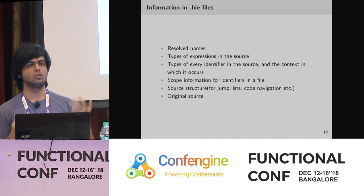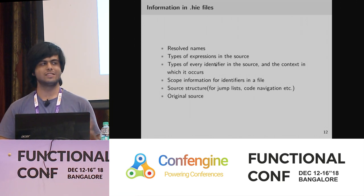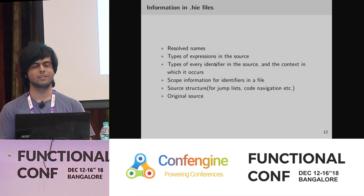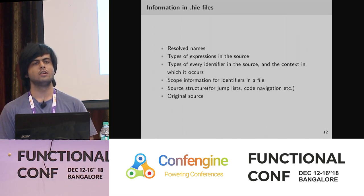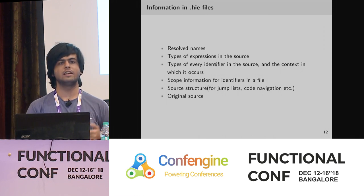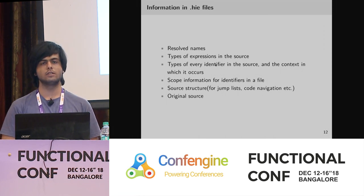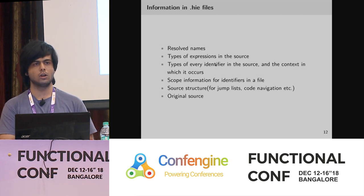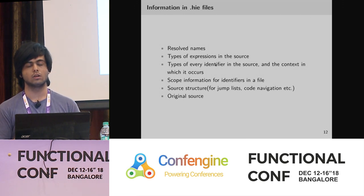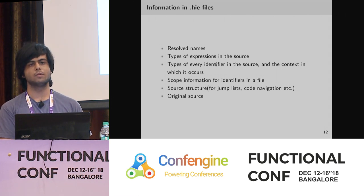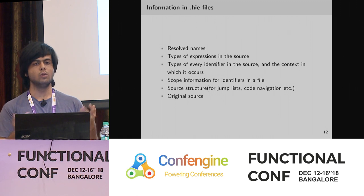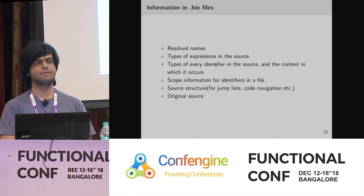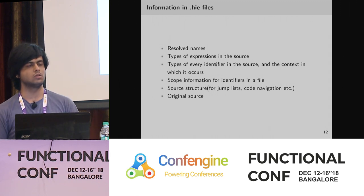It also includes the original source. So if you work on something and it doesn't compile, and then you close your editor and come back to it another day — the code doesn't compile, so when HIE asks GHC for info, GHC will say it can't do anything because the code doesn't compile. But if you have a HIE file from the time it last compiled, tooling can make use of that HIE file to still give you information about your source.